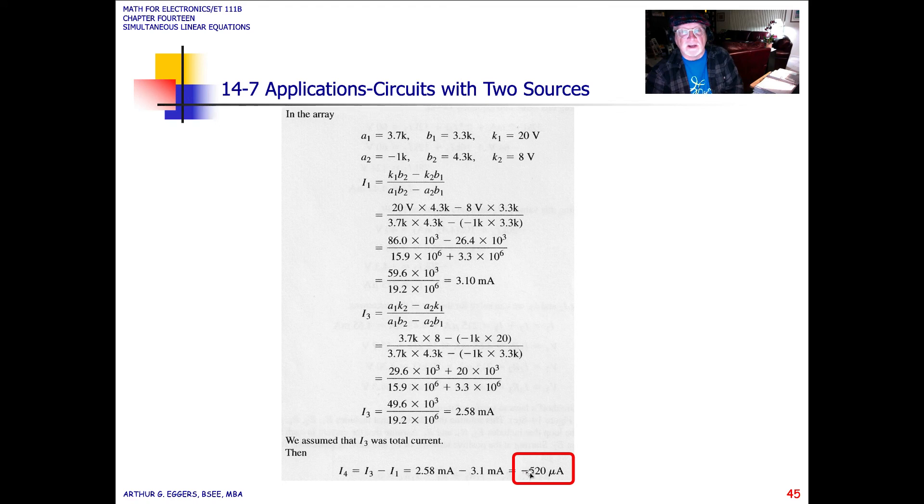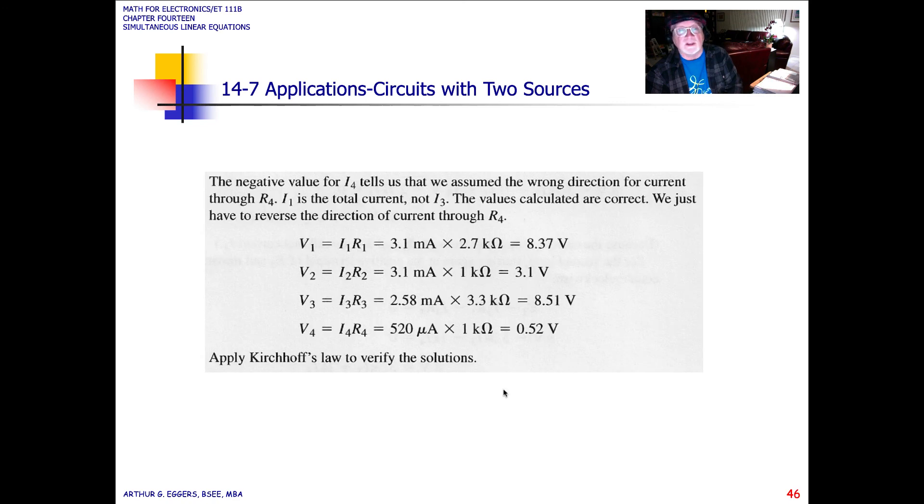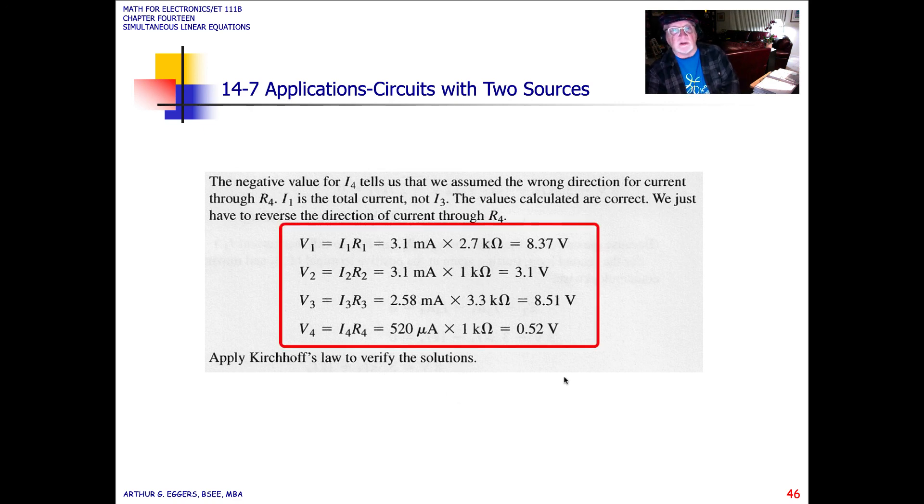So you can see here this minus 520 microamps for I4 is just telling you that the current was going the wrong direction. It doesn't make the value wrong, it just makes the polarity wrong because we chose the wrong direction. Once we have our values here, you can see they put the positive value in, multiply it times each of the resistors, we got our drops, and then we start to apply Kirchhoff's law as we did before.